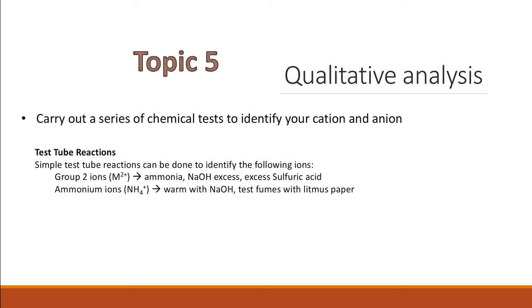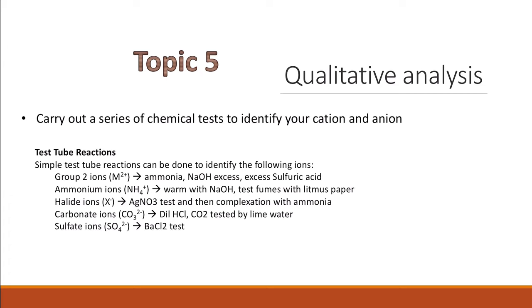Group 2 ions: remember the test with ammonia, sodium hydroxide excess, excess sulfuric acid, and the results. Ammonium ion test with sodium hydroxide and litmus paper. Halide ions with the silver nitrate test and complexation with ammonia. Carbonate test with dilute hydrochloric acid and the test for carbon dioxide with lime water. Sulfate ion with barium chloride. And of course, the aqua ions or the ions from the transition metals and their tests.